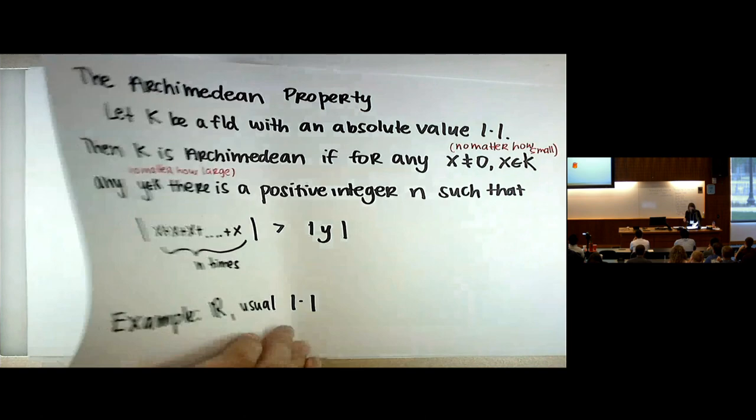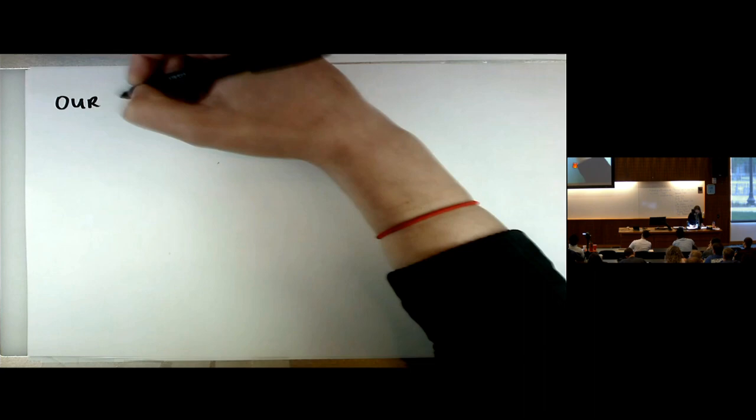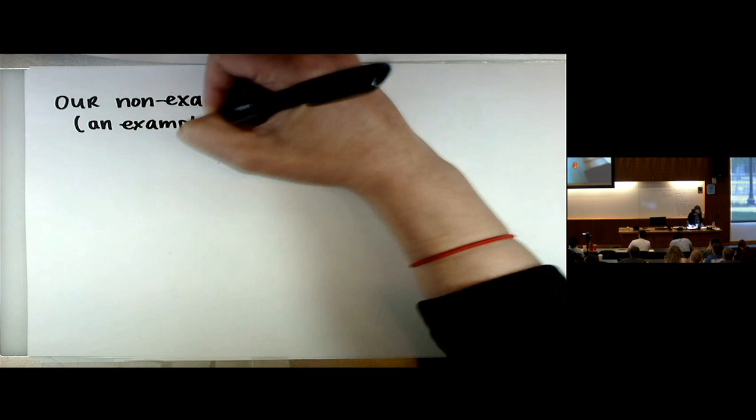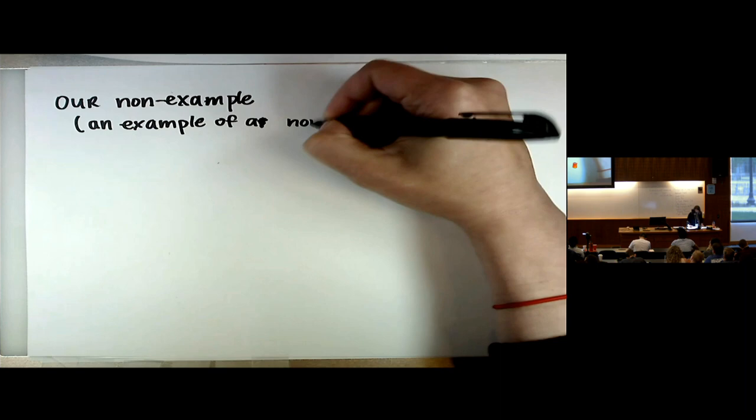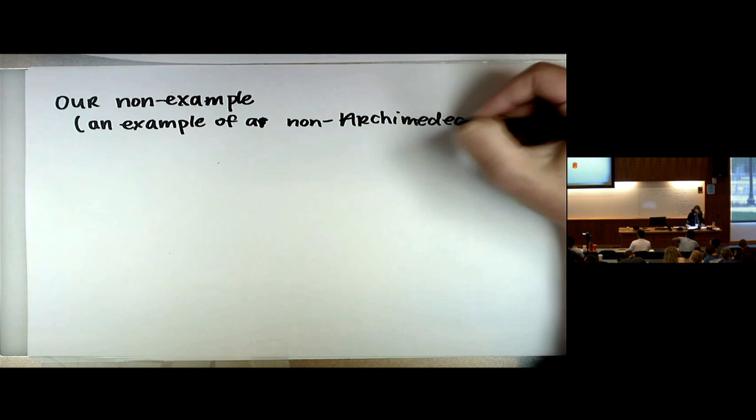We'll have one particular non-example in mind — meaning it is an example of a non-Archimedean field — and that's my goal for the rest of the lecture. There are really only two kinds of fields: the Archimedean ones and the non-Archimedean ones.